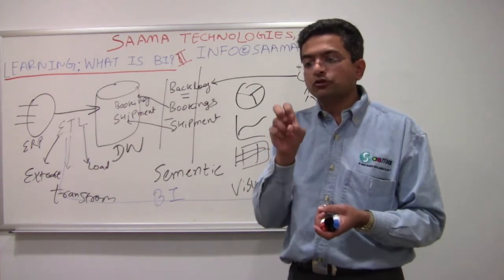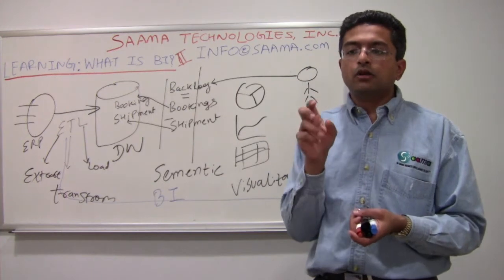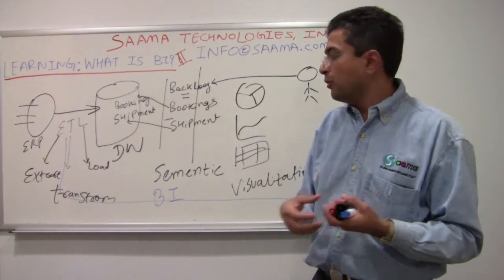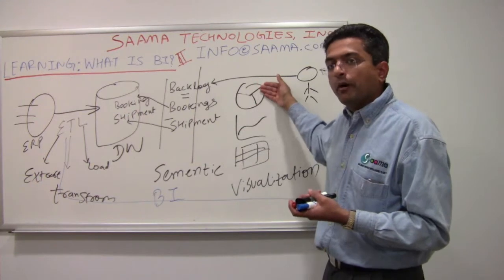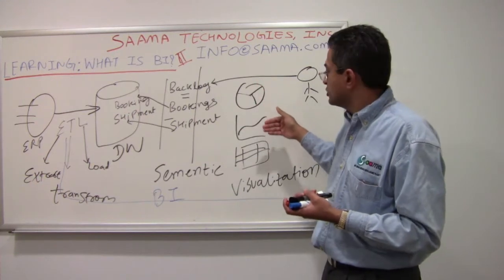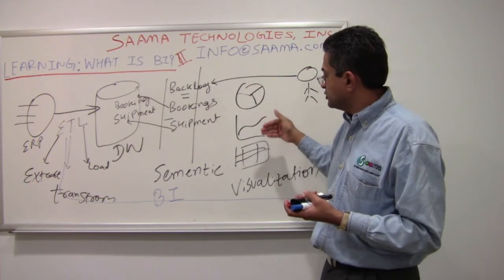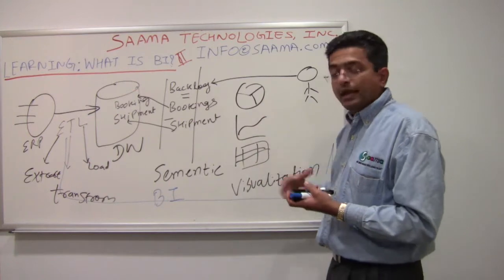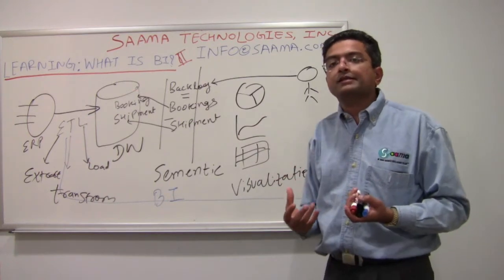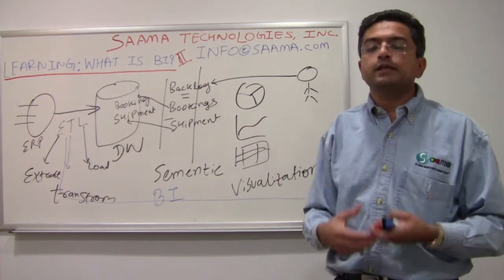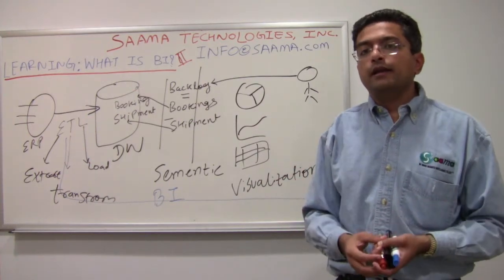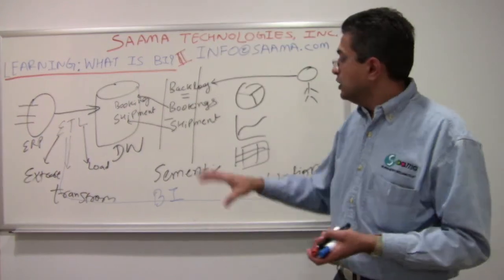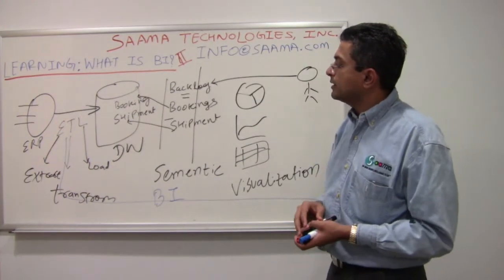As an end user, I can just understand the concept of what a backlog is, use it in my reports, and visualize them — bar charts, pie charts, line charts, tables, pivot tables — in any form that makes sense to me, and then make a business decision from there. That's the end-to-end cycle.